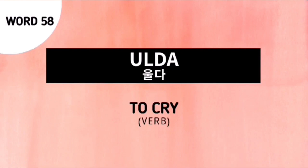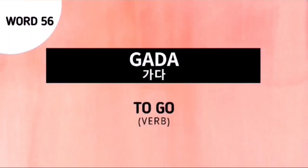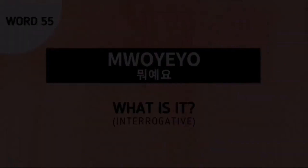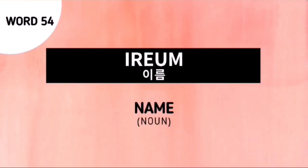Next word is word number 58: olda. This is a verb which means 'to cry'. Next word is hada, which means 'to do'. Next word is kada, which means 'to go'. Next word for our review is boyeo, and this is used to say 'what is it' in Korean. Next word is word number 54: irum. This is used to say 'name'.